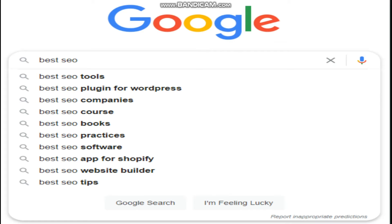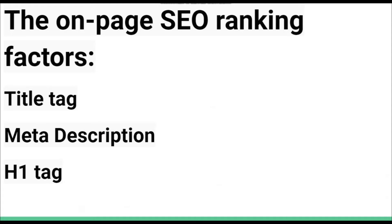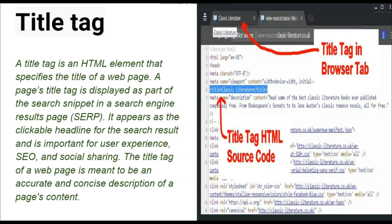Yeh kuch examples hain keywords ki. On-page SEO ranking factors mein title tags, meta description, aur H1 tag hota hai. Aaj inhi ko hi dekhte hain — title tag kya hota hai.